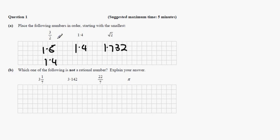1.4 comes first. 3 over 2 is the second largest. 1.732 is the third largest.